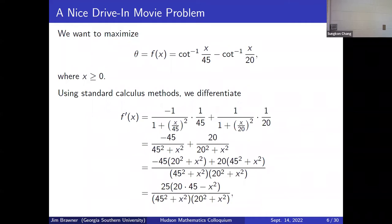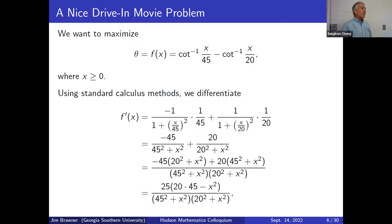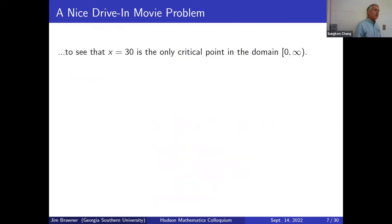Setting the numerator equal to zero, since 25 and the denominator terms are all positive, we need 900 minus x² equals zero. So x² = 900, giving x = 30 (taking the positive root since x must be non-negative). That's the only critical point in our domain from zero to infinity.